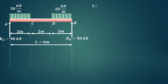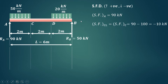Now we draw the shear force diagram. The convention is: upward forces are positive and downward forces are negative. Shear force at A is plus 90 kilonewton since RA acts upward. At the left of point C, we consider all forces to the left: RA is plus 90 and the UDL over 2 meters gives minus 100 kilonewton, so the shear force at C is minus 10 kilonewton. There is no point load at C itself, so this value holds at C.